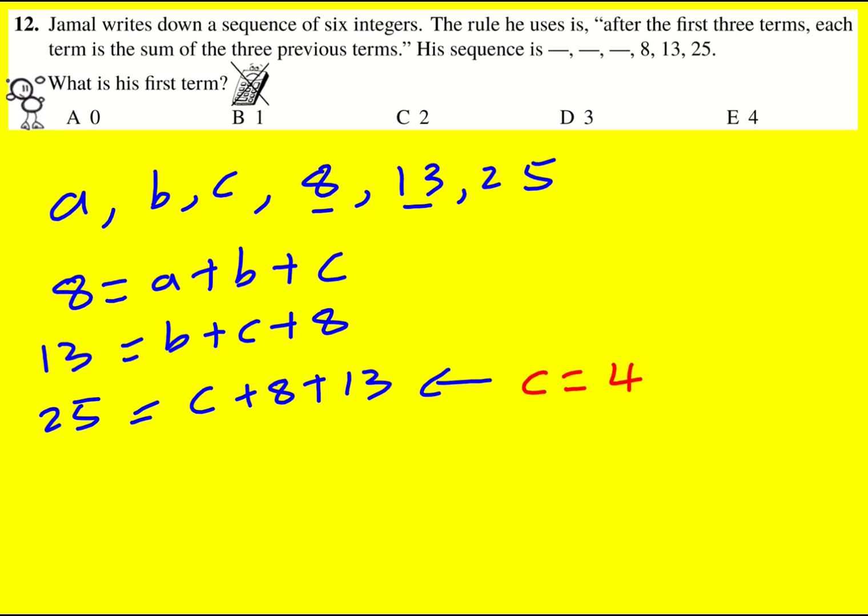And once I've got that, I can work out the other ones. So now I've got 4 here, I've got 12, and b is going to equal 1.